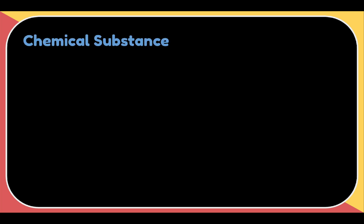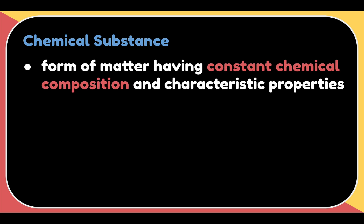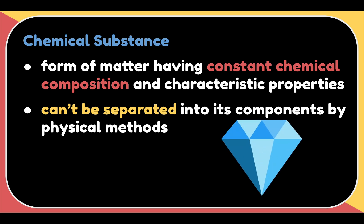Now, what is a chemical substance? A chemical substance is any form of matter having constant chemical composition and characteristic properties. Other sources say that a chemical substance is something that can't be separated into its components by physical methods. For example, a diamond, which is made up of entirely carbon.